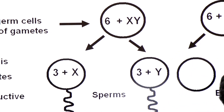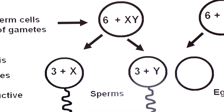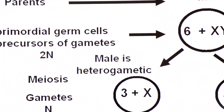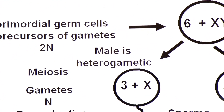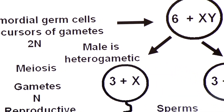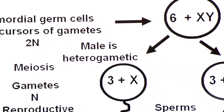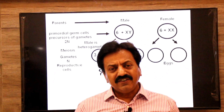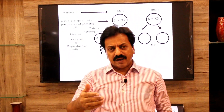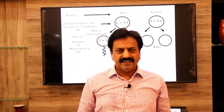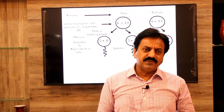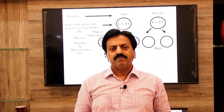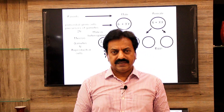Male Drosophila is heterogametic. Hetero means different, gamos means gametes. An organism that produces different types of gametes is called heterogametic.